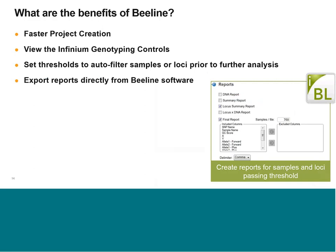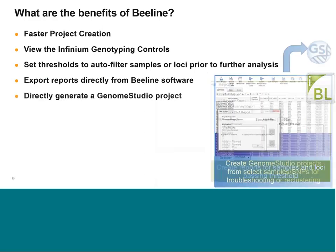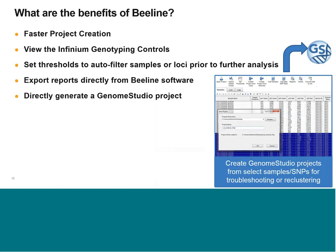Another unique feature to Beeline that Genome Studio does not have is the threshold function, which allows you to auto-filter samples or loci prior to further analysis. This bar is dynamic — you can move it up and down — and it's a nice way to visualize QC parameters and filter above and below those thresholds. The report formats generated in Beeline are the same formats used in Genome Studio. And the integration with Genome Studio means you can use both software together on the same data without generating a totally new project in Genome Studio, leveraging each software for their different strengths — Beeline for fast project generation and QC, and Genome Studio for deeper analysis and clustering.